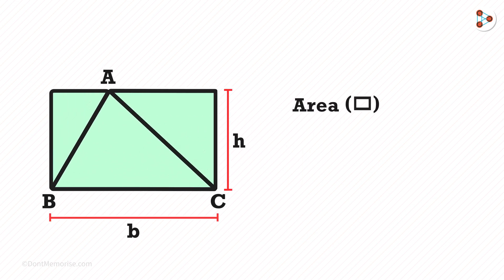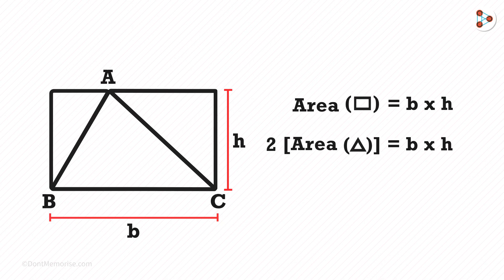So what is the area of a rectangle? Correct. It's B times H. It means the area of both the triangles together is B times H. And because the triangles are congruent, the area of one triangle will be base multiplied by height divided by 2. This way we get the formula of a triangle.